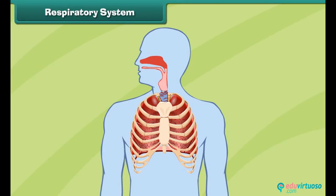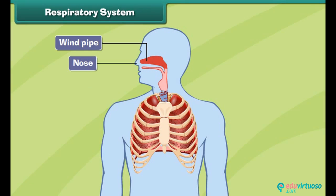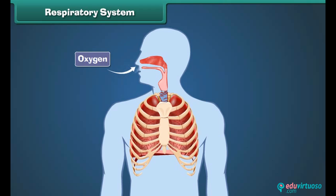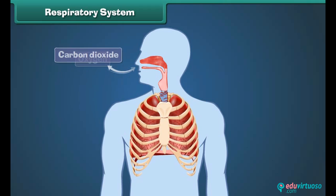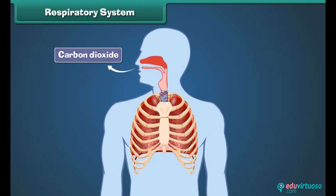The human respiratory system is made up of the nose, windpipe, and lungs. It helps take in oxygen from the air and remove carbon dioxide from the human body. The oxygen mixes with food to give us energy.